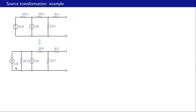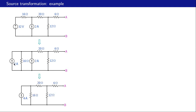With that transformation we get the Norton equivalent circuit: i-n is two amperes and r-n is sixteen ohms, with the rest of the circuit left untouched. The two current sources — two amperes each — are in parallel sharing the same nodes, so they can be combined into one single source of four amperes in parallel with sixteen ohms.